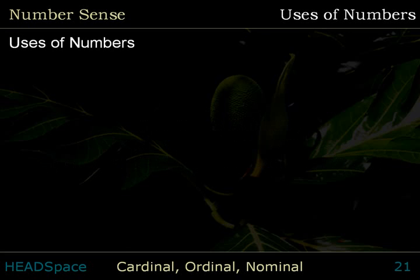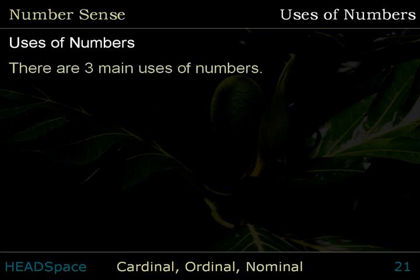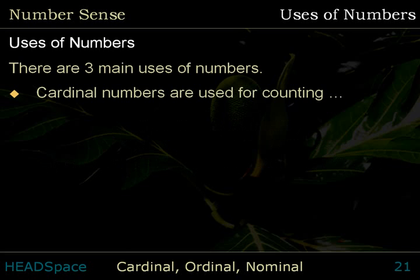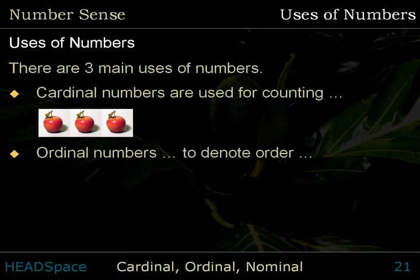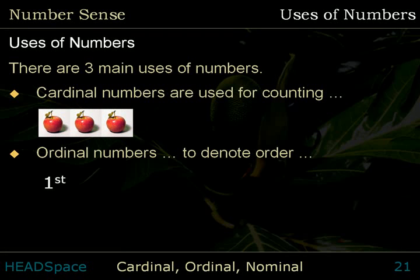Uses of Numbers. In everyday life, there are three main uses of numbers. Cardinal numbers are used for counting: 1, 2, 3. Ordinal numbers are used to denote the order of objects in a set: 1, 2, 3.